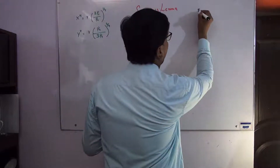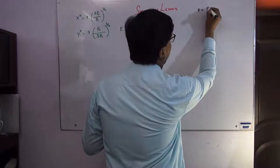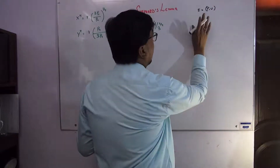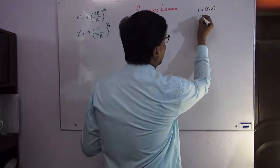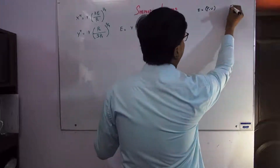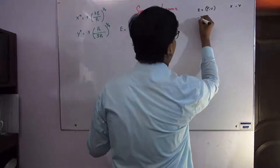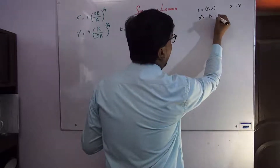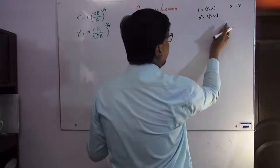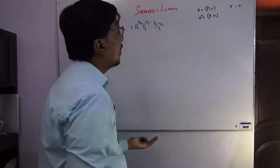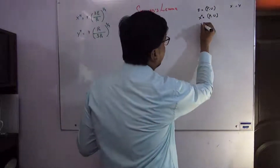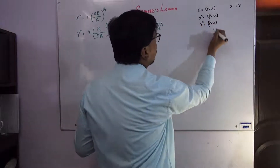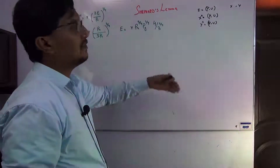The general form of the expenditure function involves prices and utility. If we have the Hicksian demand function in the two-commodity case, X and Y, then we have the Hicksian demand function expressed in prices and utility for both commodities X and Y.